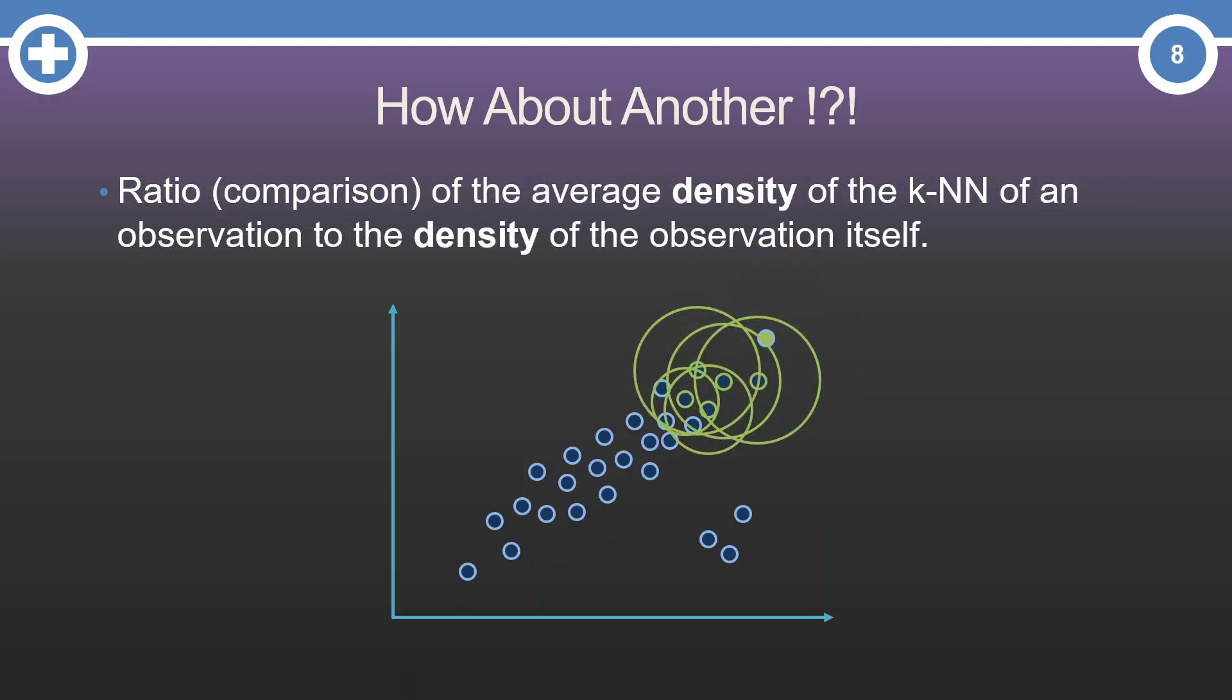Again, now let's find the densities of those five nearest neighbors. Each of the densities of the highlighted points are circles, with a radius being the distance to their 5th nearest neighbor. Lots of neighborly love in this video.